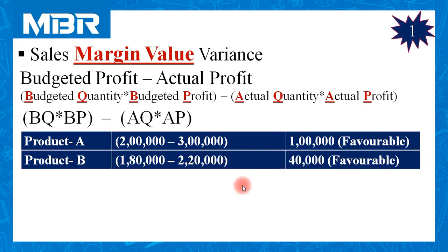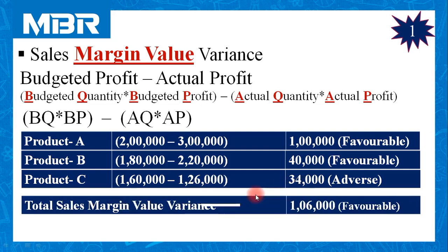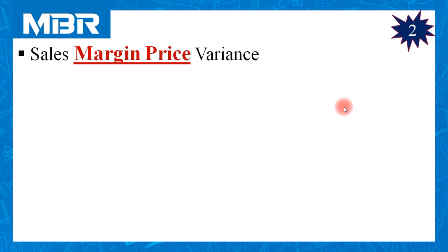The result for product A is Rs. 40,000 favorable. For product B, budgeted profit Rs. 1,80,000 against which the company earned actual profit of Rs. 2,20,000, so the result is Rs. 40,000 favorable. For product C, Rs. 1,60,000 minus Rs. 1,26,000, giving Rs. 34,000 adverse. Total sales margin value variance is Rs. 1,06,000 favorable.